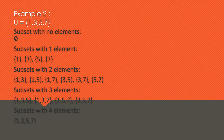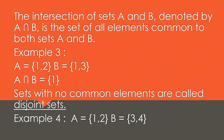The intersection of sets A and B, denoted by A ∩ B, is the set of all elements common to both sets A and B. Example number three: A = {1, 2}, B = {1, 3}. The intersection A ∩ B equals {1}, because the element one is common to both set A and set B.